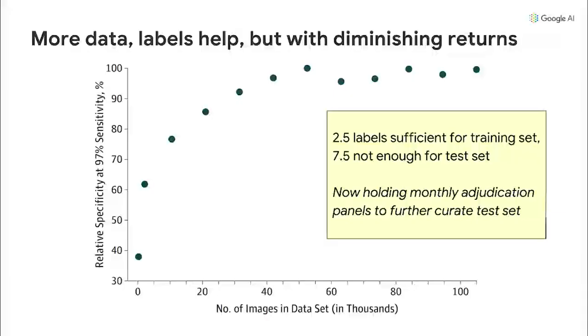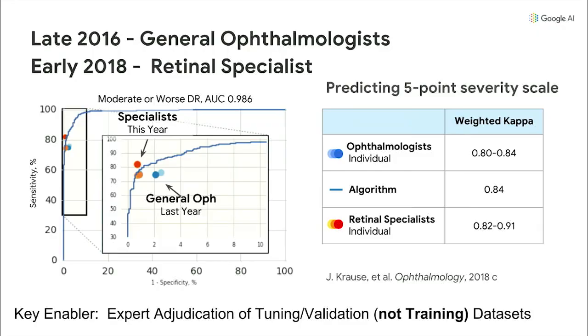Here are some lessons learned. We had some money, so we got seven diagnoses per image — and it was a waste of money. The diminishing return on labels: on the training data, about two and a half diagnoses would have been enough. But on the test set, seven wasn't nearly enough. The systems are very tolerant to dirty training data, but you want to exquisitely curate your test set. We convene monthly adjudication panels, bringing retinal specialists in to discuss case by case. We never train on that data — we just test against it, and it lets us pick better models. Over two years, we went from a little better than ophthalmologists to as good as retinal specialists.